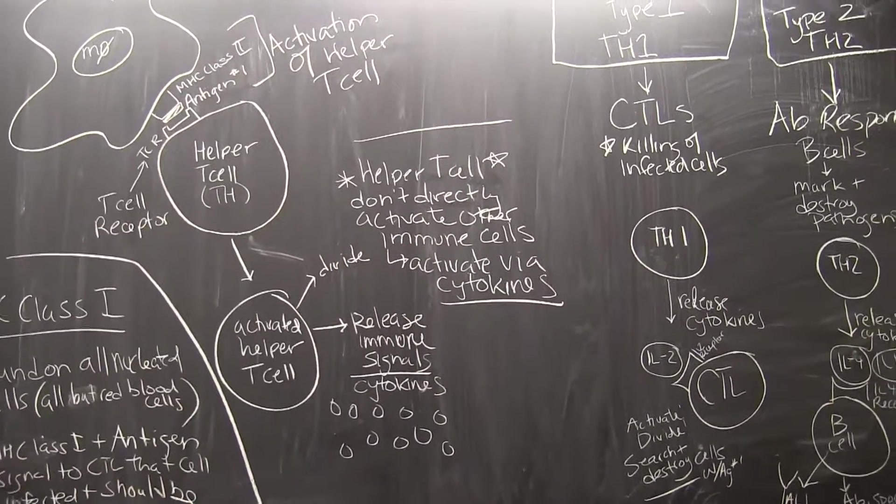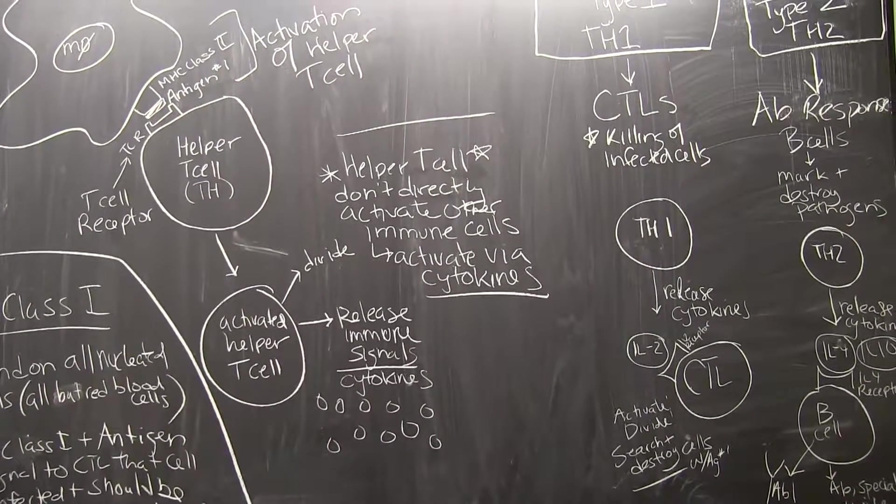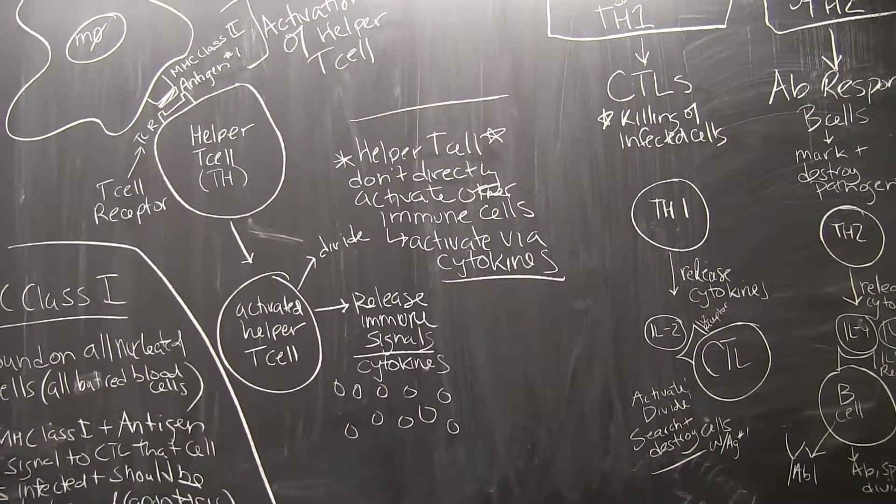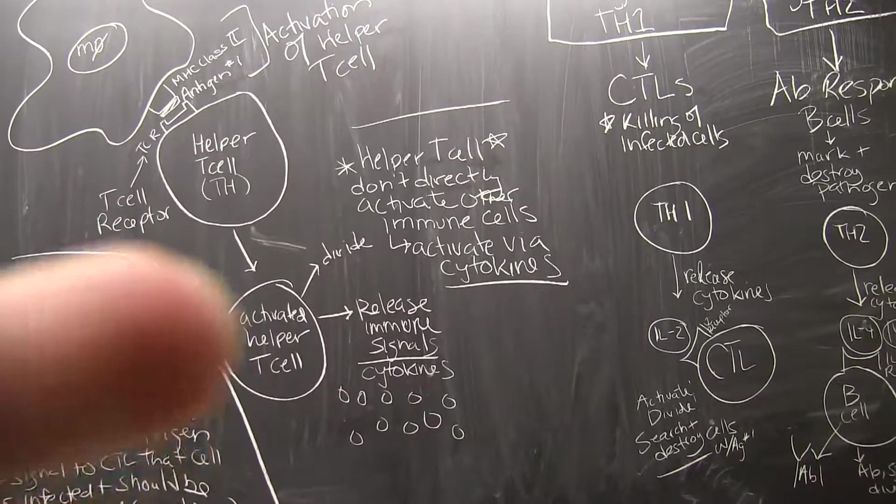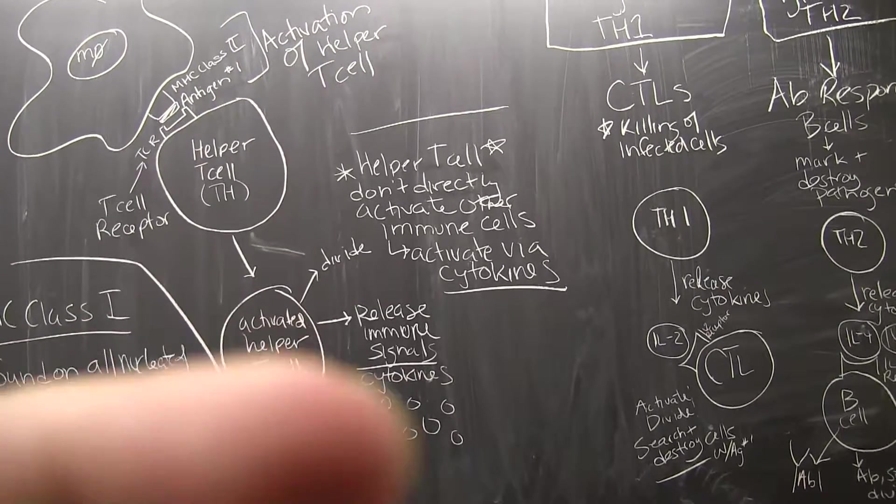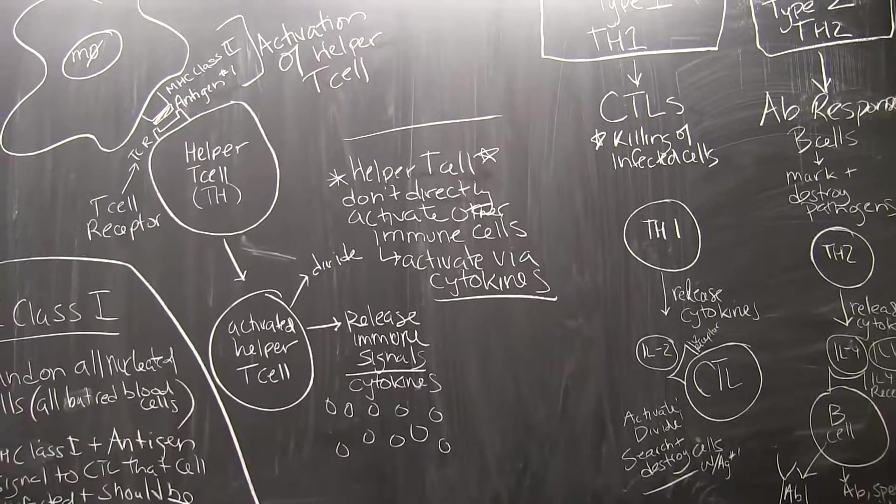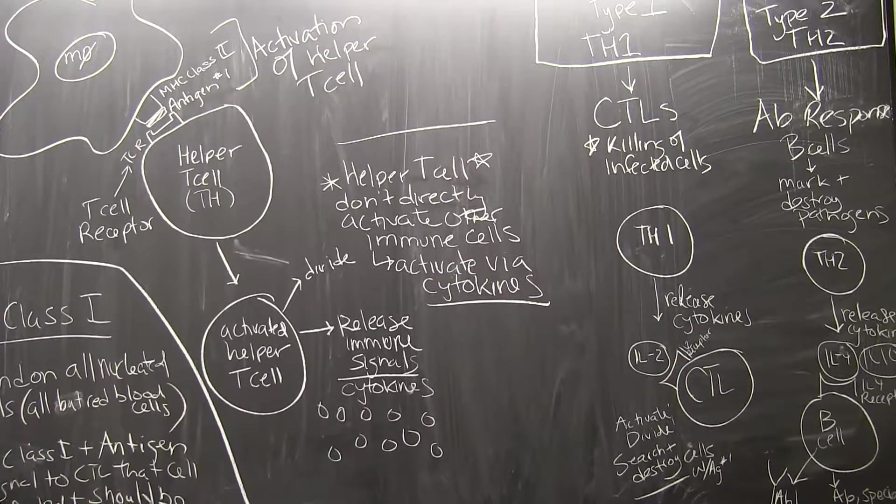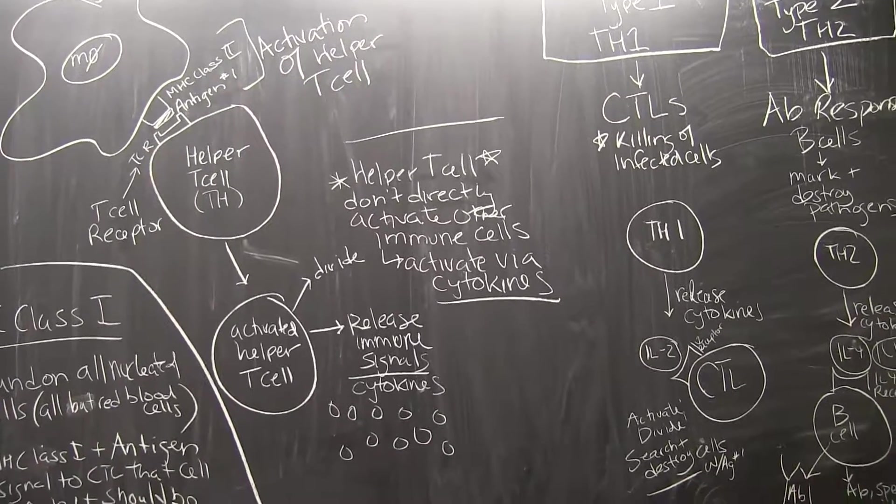It's really important to note this right here: helper cells don't directly activate other immune cells. When they release these cytokines, there's no binding of the helper T cell to another cell. No, they just release these signals and these signals are what bind to other immune cells, other T cells, and activate them or B cells, whatever they may be.